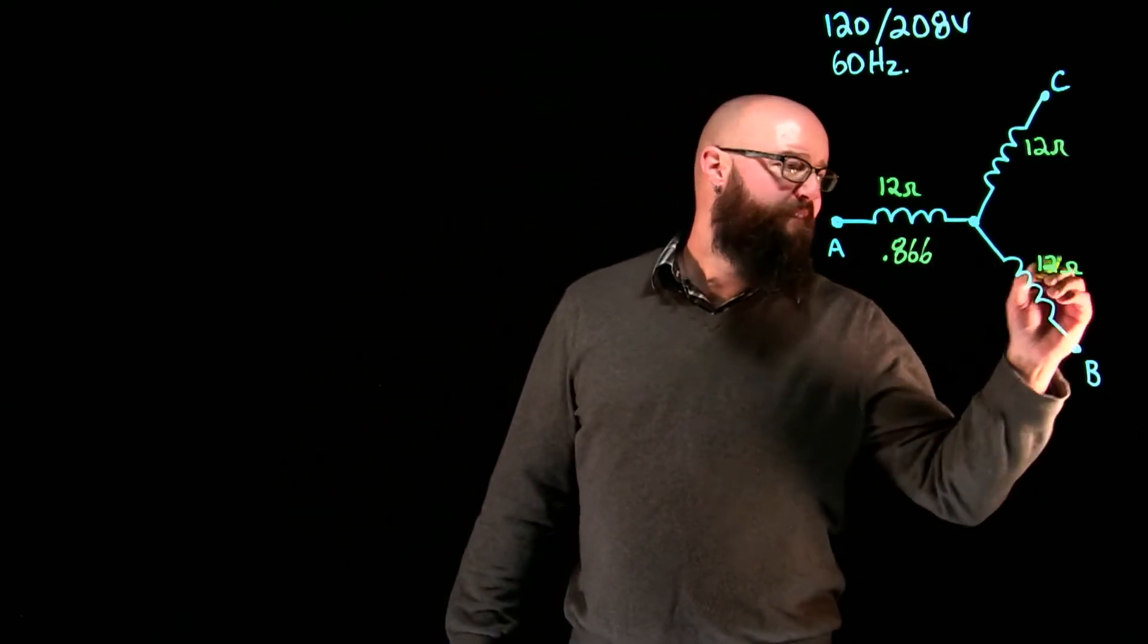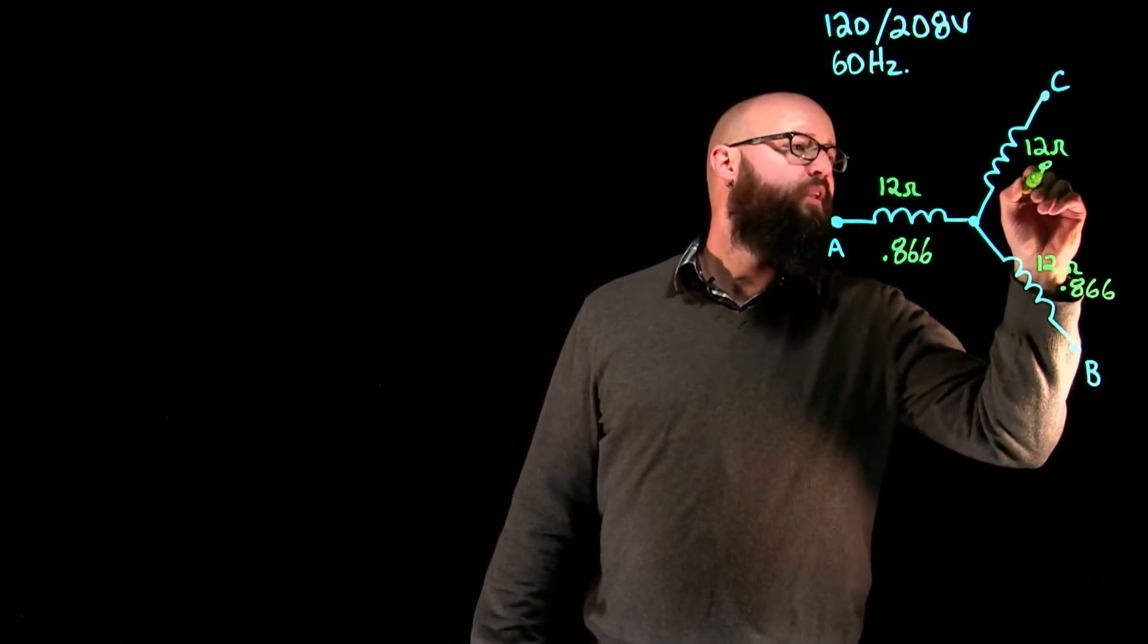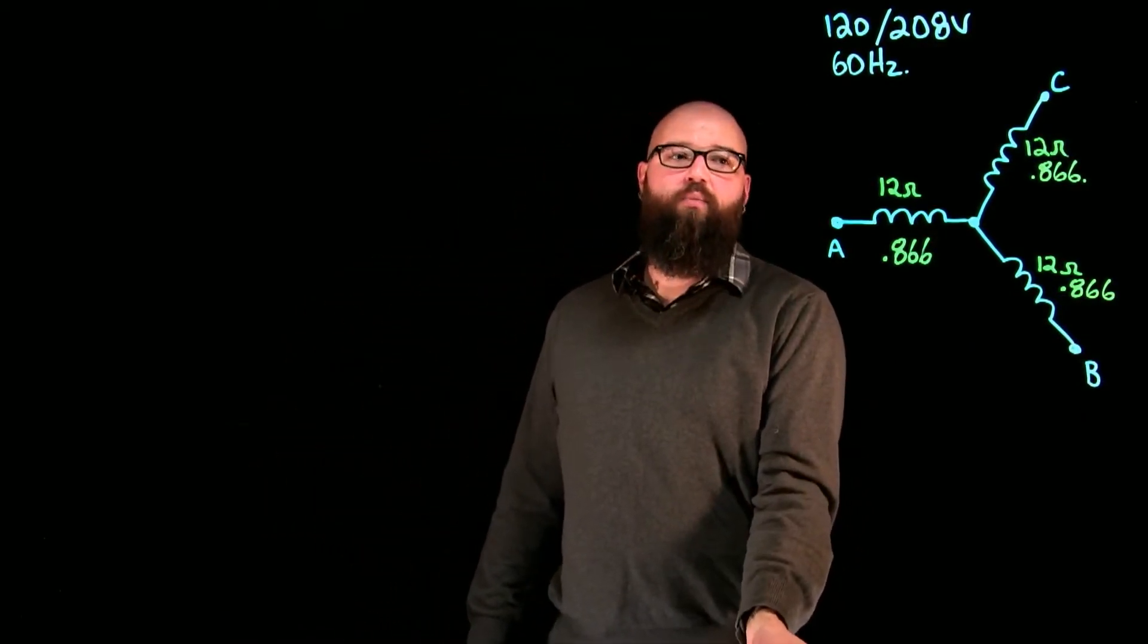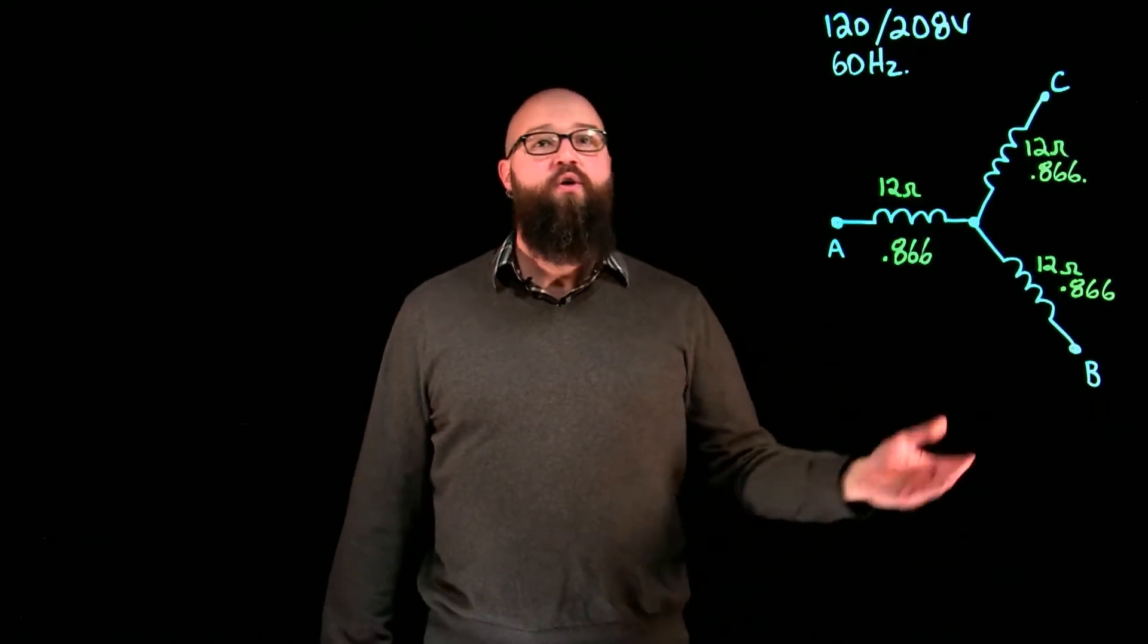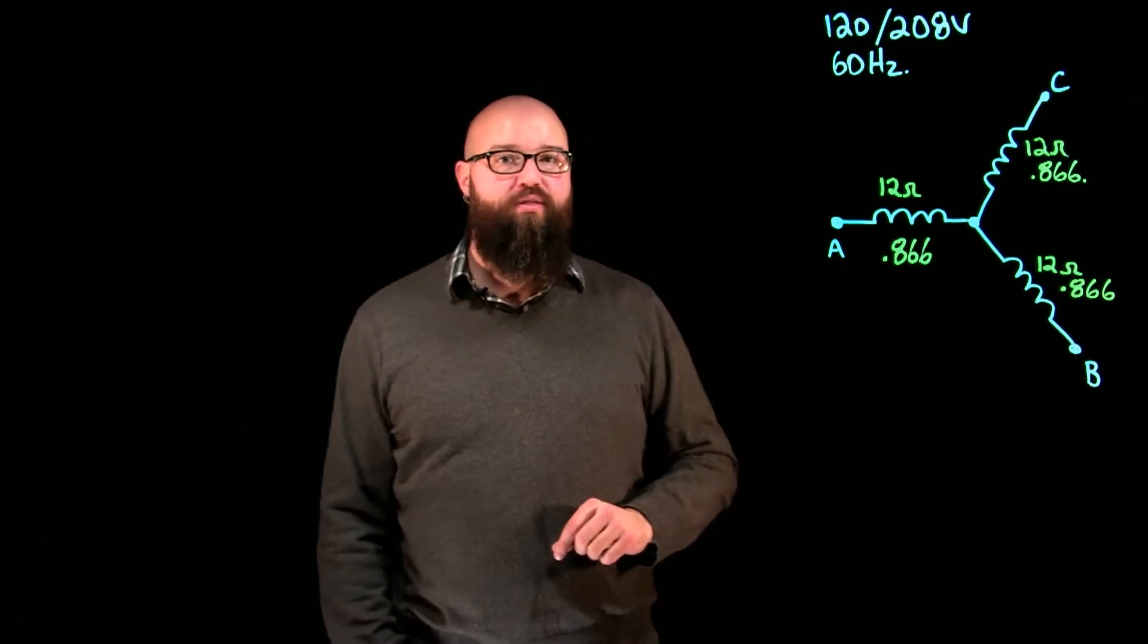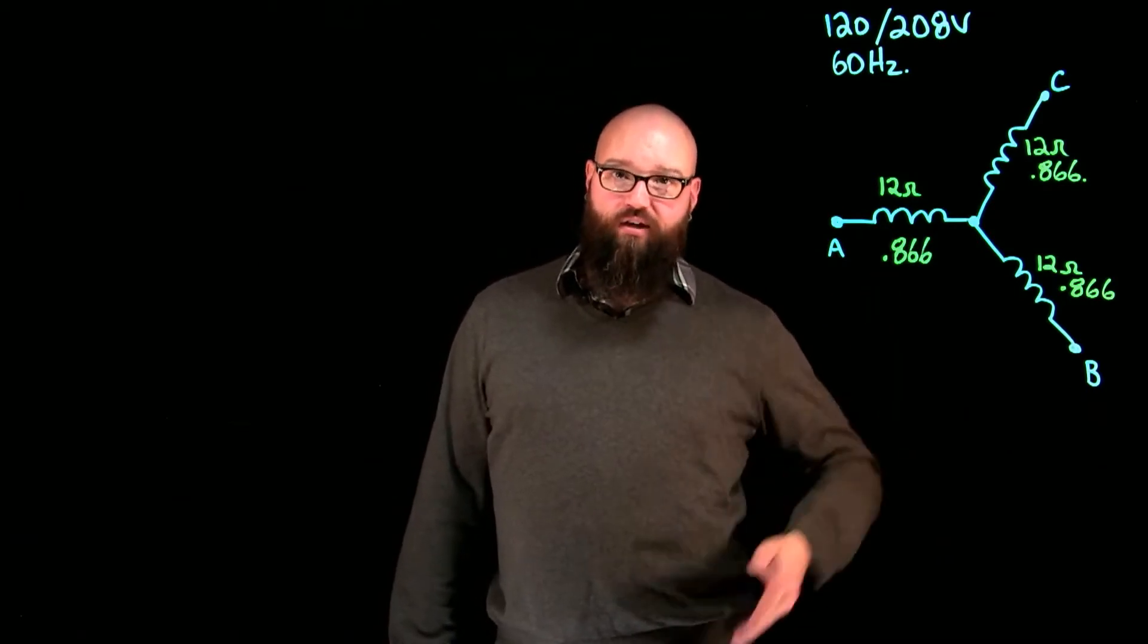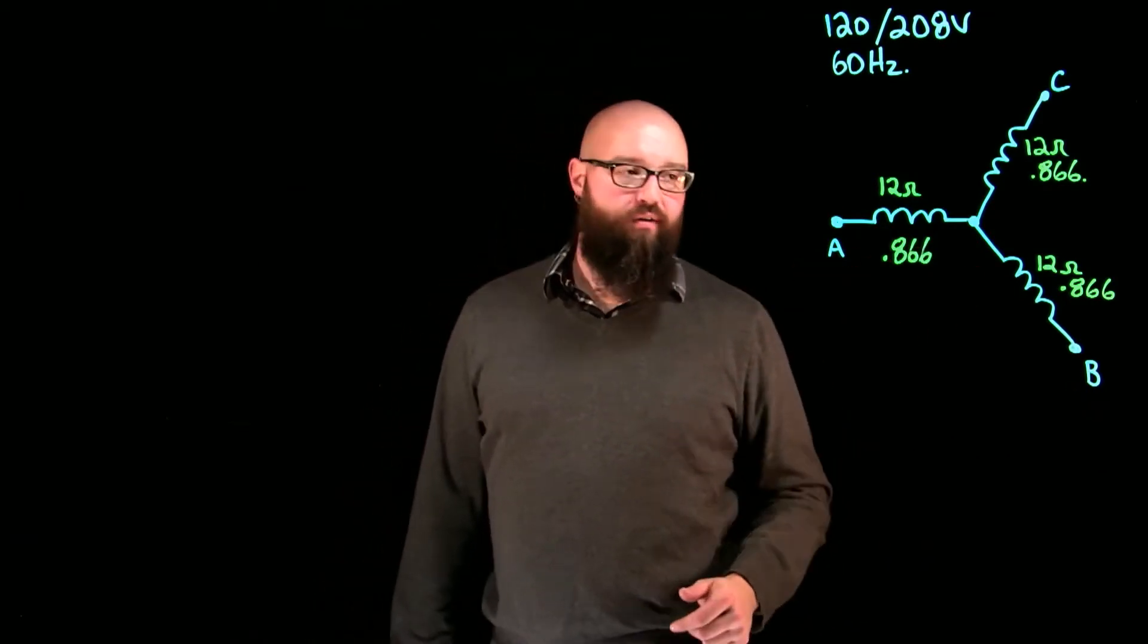So we're going to put in a power factor of 0.866 which works out to a phase angle of 30 degrees. What that means is the phase current would lag the phase voltage by 30 degrees because they're inductors. We're going to figure out what is the line current slash phase current because they're the same thing in each one of these phases.